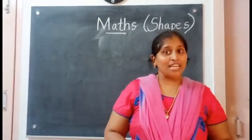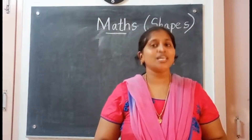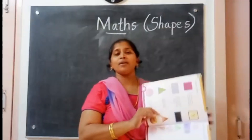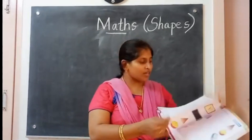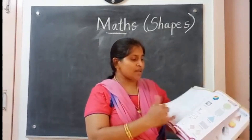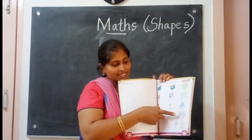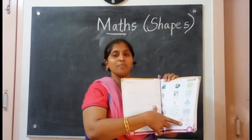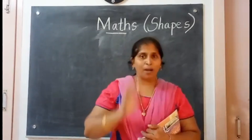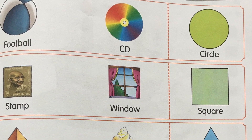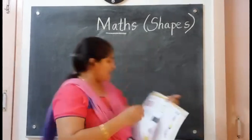Children, you all finished your English. Right now we are going to do maths. In maths, take page number 98. Already you all know what shapes are — we have learned six shapes. What are the shapes? Circle, square, triangle, rectangle, oval, and diamond. Today we are going to learn about the shapes.